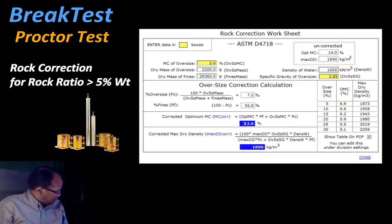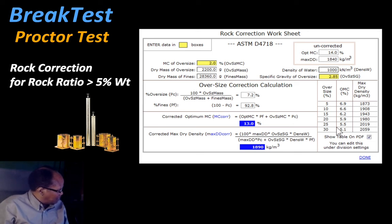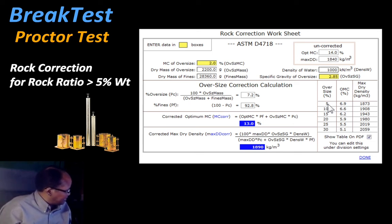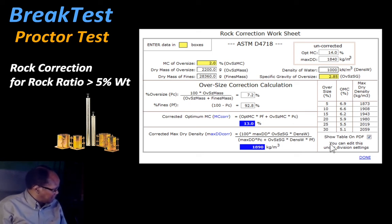There is another table which iterates through different combinations of moisture content and oversize percentage, providing an estimate of the maximum dry density. This table will be included in the final proctor test report if you choose to show it.